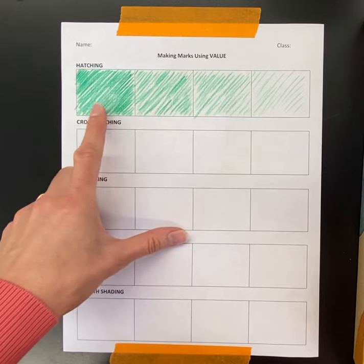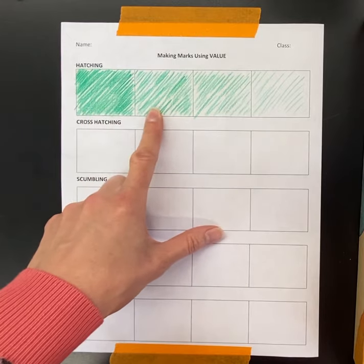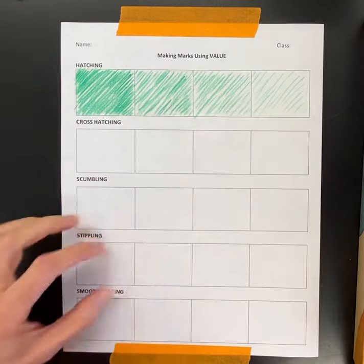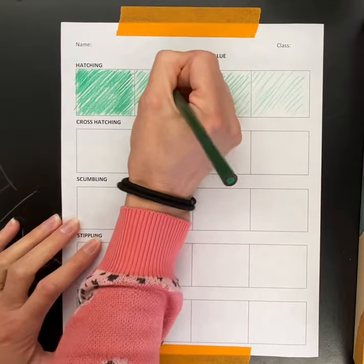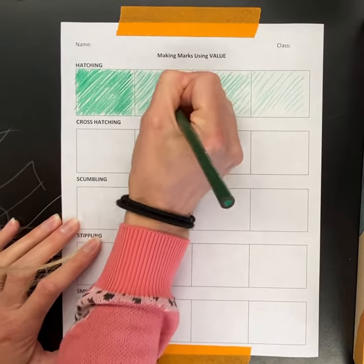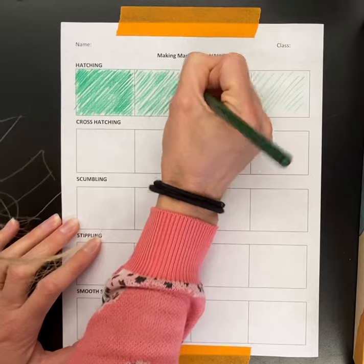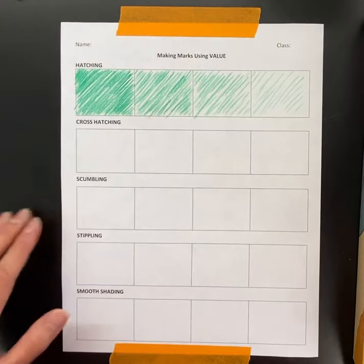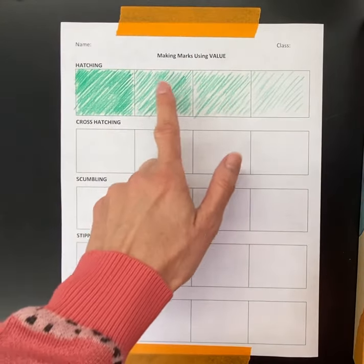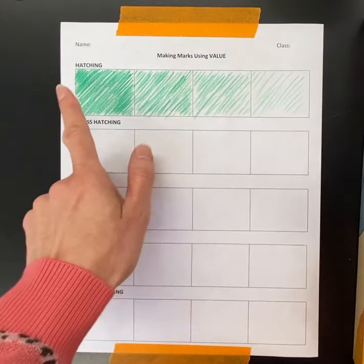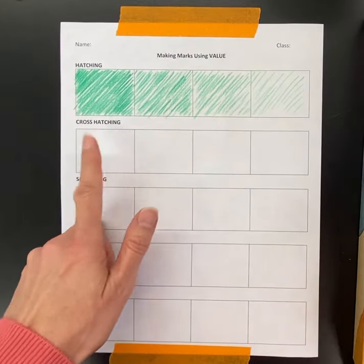So it has a scale: dark, medium, medium light, light. These two are a bit similar so I'm actually going to add a few more lines here. That made it a little bit darker so you can see it goes from dark to light.